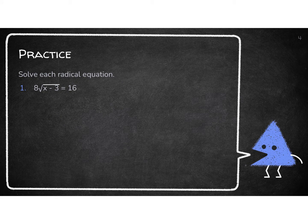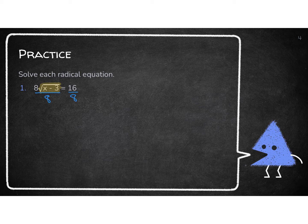Let's look at this example: 8 times the square root of x minus 3 equals 16. I highlight or box everything underneath the radical — the radical and everything underneath it. Anything that's not highlighted is what you're trying to get rid of. So I need to get rid of that times-by-8. That is multiplication, so to undo multiplication, I divide. That cancels my 8s out, so I'm left with the square root of x minus 3 equals 2.